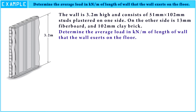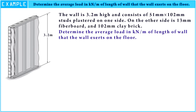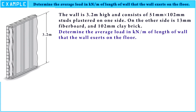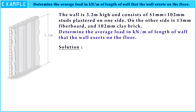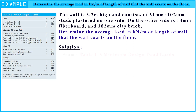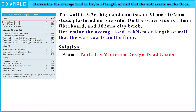First of all, we need to look at the picture at the left. We see the height of the wall is 3.2 meters, so we can determine the problem easily. Look at table 1.3 about minimum design dead loads. We see the wall clay brick, which has a thickness of 102 millimeters, is 1.87 kilonewton per square meters.